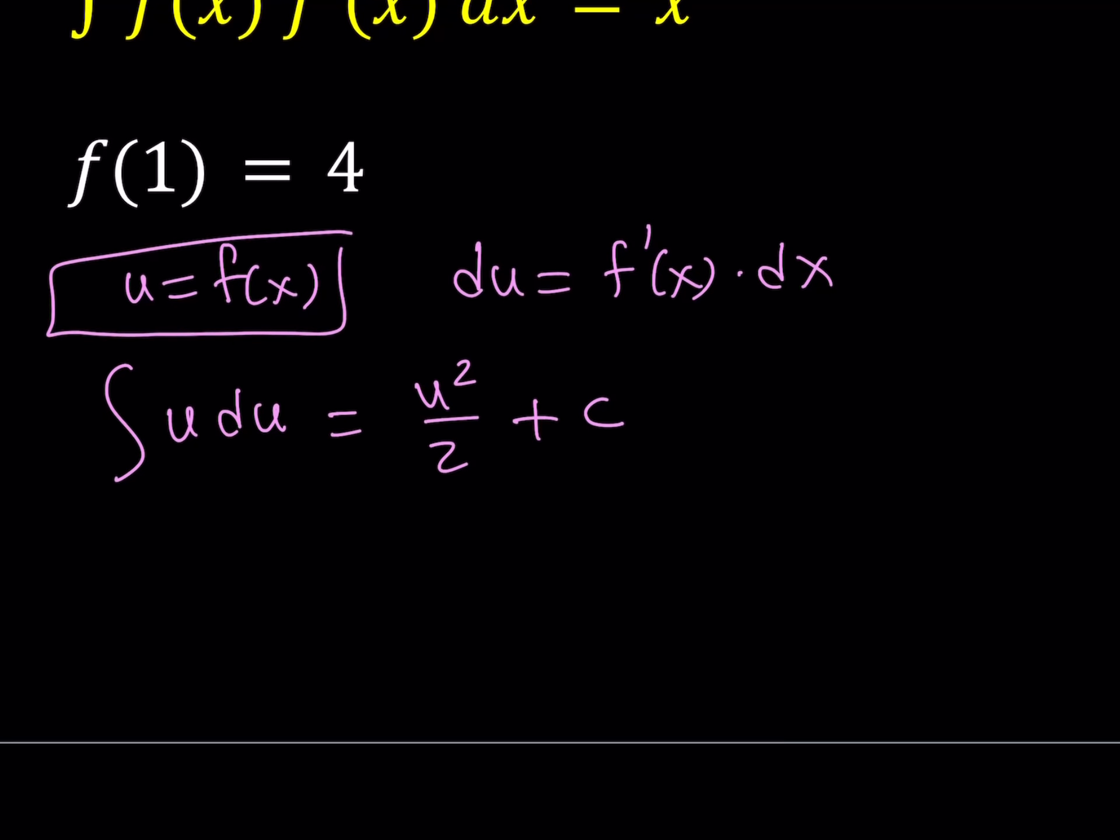Now we can go ahead and replace the u with what it is. We said that u equals f of x, so this integral is equal to f of x squared over 2 plus c. We're also given that this is equal to x. So let's set it equal to x. And from here, let's solve for f of x.